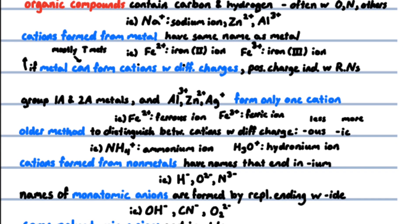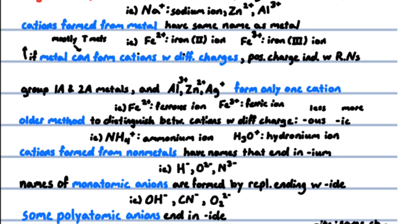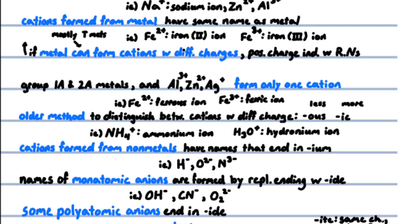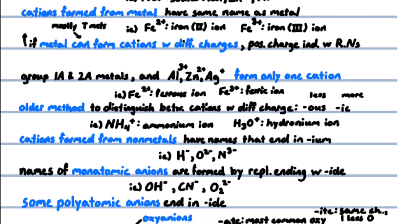An older method used for distinguishing between differently charged ions of a metal used the endings -ous and -ic added to the root of the element's Latin name—for example, ferrous ion and ferric ion. Cations formed from non-metal atoms have names that end in -ium, like ammonium ion and hydronium ion.